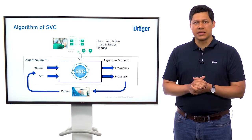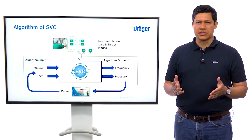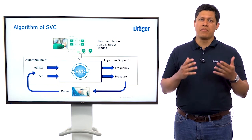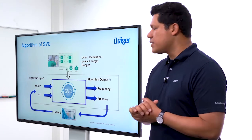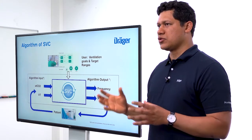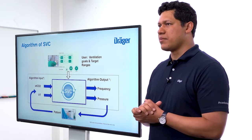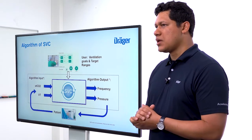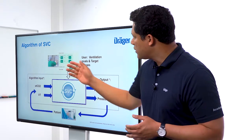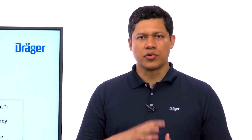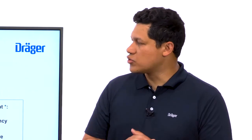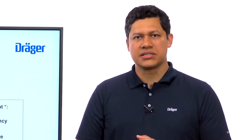Frequency and pressure are the main parameters that Smart Ventilation Control manages, but not the only ones. Once the algorithm has made changes to the main ventilation parameters, it will continuously monitor the patient, taking the tidal volume and ETCO2 as inputs to maintain a closed-loop control targeting the ventilation goals and target ranges set by the user.